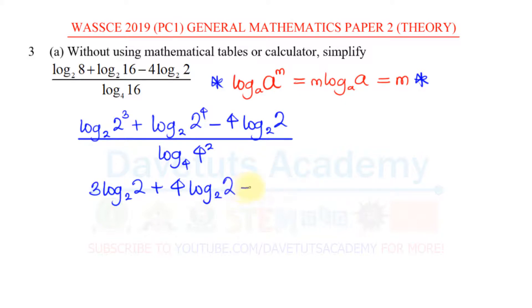Minus 4 multiplied by log to base 2 of 2, and you can see these 4 log to base 2 will just subtract each other. Then I can divide everything by, the power can also come down, so I have 2 log to base 4 of 4.